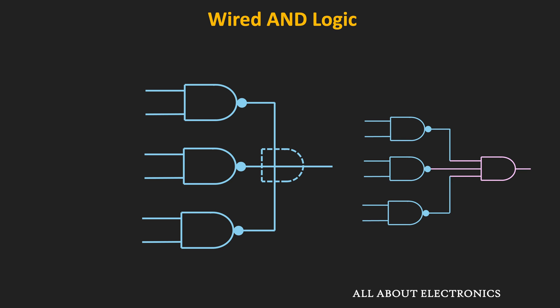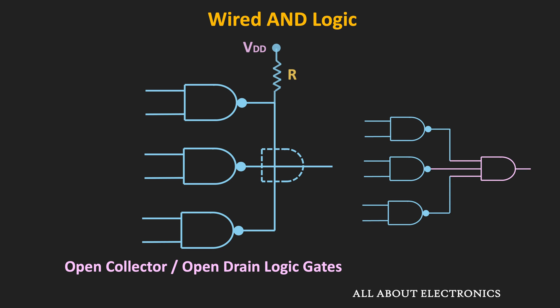This wired AND logic will work only with open collector or open drain logic gates. As you know, open collector or open drain logic gates require an external pull-up resistor for proper functioning. That means for this wired AND logic to work properly, we also need to connect an external pull-up resistor.